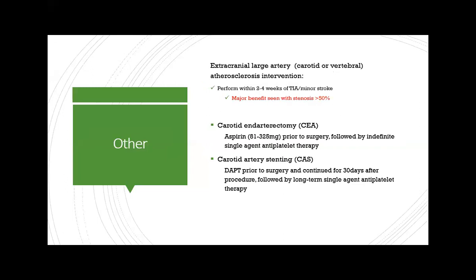For extracranial large arteries — carotid and vertebral stenosis or atherosclerosis — intervention is performed two to four weeks after the TIA or minor stroke. Major benefit is only seen when stenosis exceeds 50%; anything lower, vascular surgery will not intervene. For carotid endarterectomy (CEA), aspirin is given prior to surgery and antiplatelet therapy continued afterward. For stenting, dual antiplatelet therapy is required, continued for 30 days post-procedure, then a single agent thereafter.